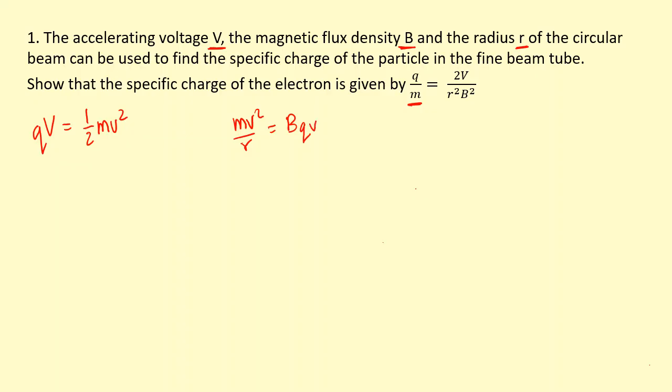We can cancel out one of the v's from both sides here, and then I'm going to make v the subject because I don't know what v is. I'm going to use it to eliminate the v from both sides. So qV equals half times mass times Bqr over m squared.